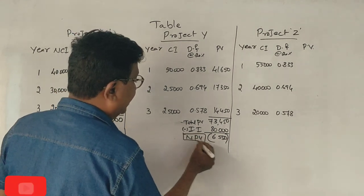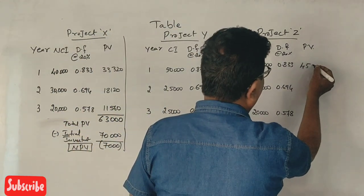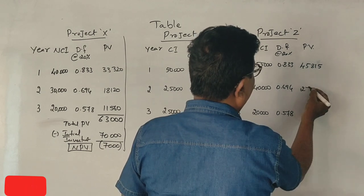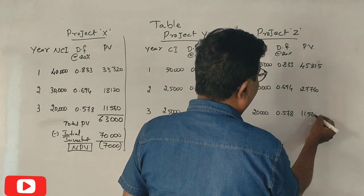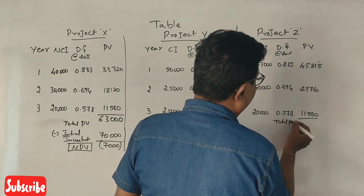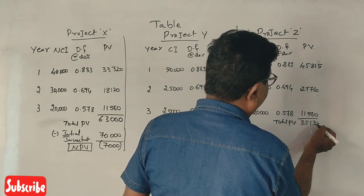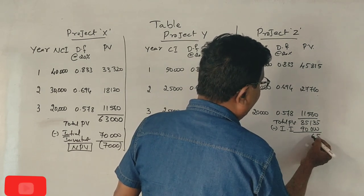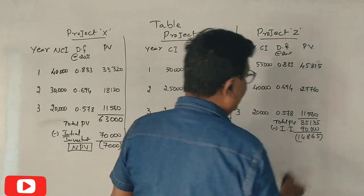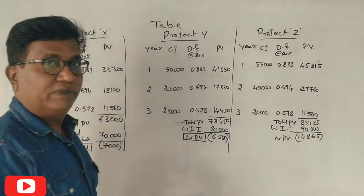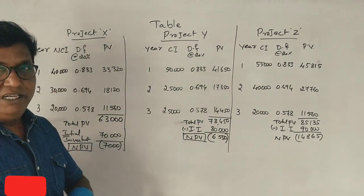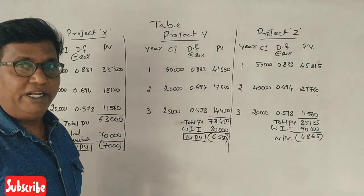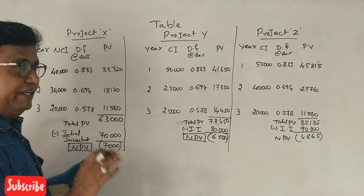For project Z: 45; 8.50; 1.50 — values 57,760; 7,760; 11,560 — 5,560. Total present value is 85,350. Less initial investment 90,000. NPV is negative 4,865. So project Z NPV is also negative. Everything is negative — all NPVs are negative.